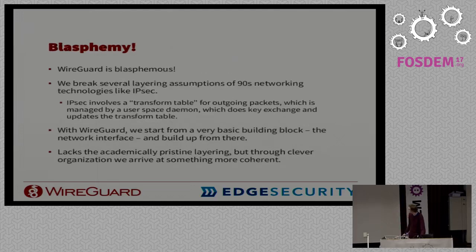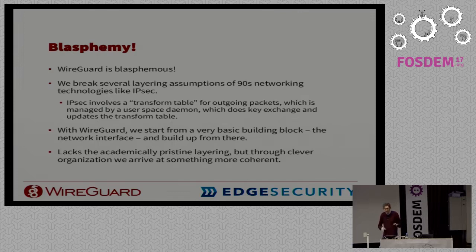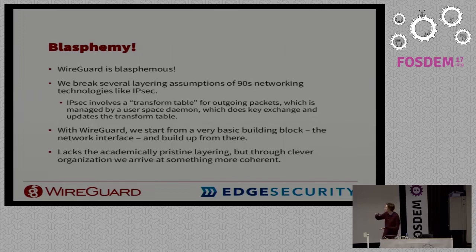On the other hand, WireGuard is a bit blasphemous. IPsec is nice in a lot of ways — it was made by a big committee, engineered by a lot of people, and does all the nice layering in a very pristine way. But it's also super complicated, hard to implement, and prone to bugs. WireGuard actually breaks these networking assumptions from the 90s where you have these nice layers. Instead, we do something that's on the surface wrong — we smoosh everything together — and then try to come up with good engineering solutions to regain the coherence, so it remains simple but still works.